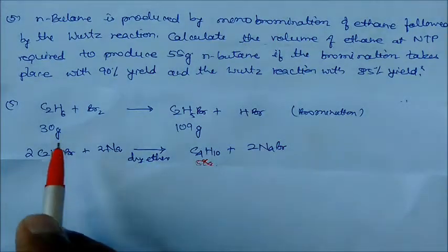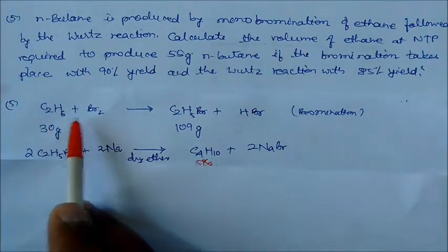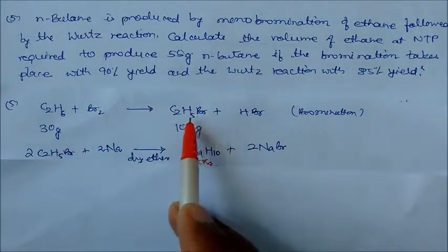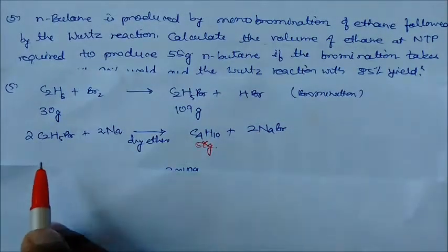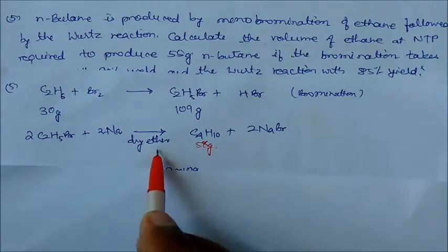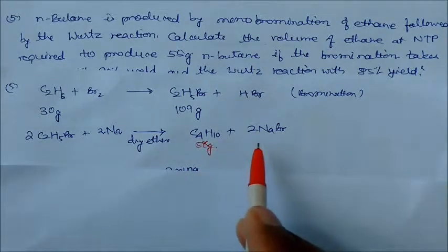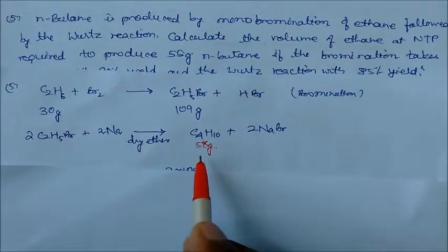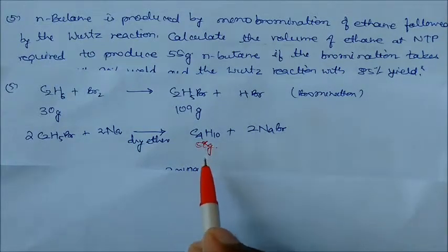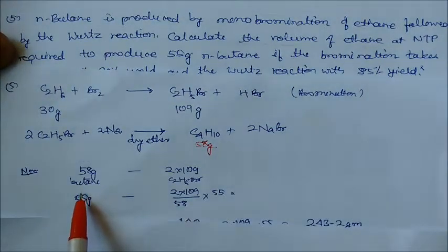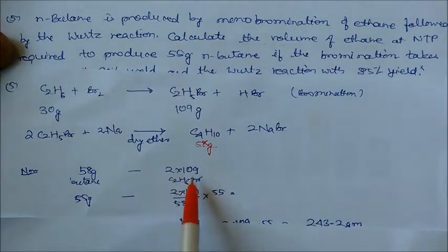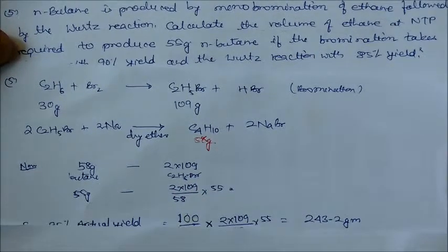Ethane on bromination gives ethyl bromide plus HBr. Ethyl bromide then reacts with sodium in dry ether in the Wurtz reaction to give C₄H₁₀ (N-butane, molar mass 58 grams) and NaBr. If 58 grams of butane requires 2 × 109 grams of ethyl bromide, then 55 grams requires a proportional amount.